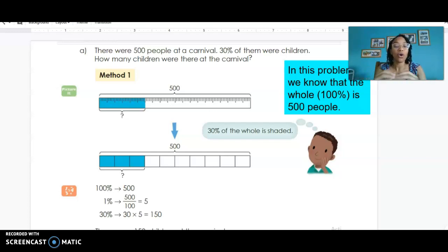So we can set up a separate bar model where 500 is the whole number of people, but 100% is the whole. Now you can see that 3 blocks out of 10 blocks were shaded, that's 30%. 30% is shaded. So we know 100% is the whole and the whole is worth 500 people. We want to figure out what 1% is worth. If we take 500 and divide it by 100, we'll get the 1% value: 5. Now we want to figure out what 30% of that whole is. We take the 30% and multiply it by what we knew 1% was worth. 30 times 5 gives us 150, so 150 children were at the carnival.